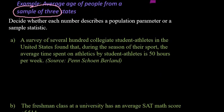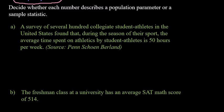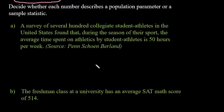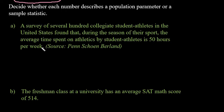Anytime you are talking about a sample it is known as a statistic, and anytime you are talking about a population it is known as a parameter. I have two examples here. I want you to pause the video and decide whether each number describes a population parameter or a sample statistic — it's always helpful to try it on your own first. The first one: a survey of several hundred collegiate student athletes in the United States found that during the season, the average time spent on athletics is 50 hours per week. The second one: the freshman class at a university has an average SAT math score of 514. Go ahead and pause the video, write down your answers, then come back and see if you got it right.